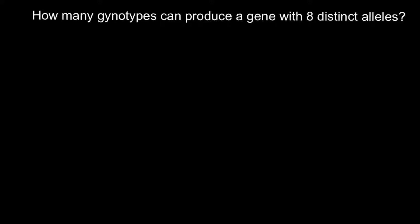Let's assume this question is about a normal diploid organism. A diploid organism has two sets of chromosomes — one set from the mother's side and another from the father's side. I'm using different colors to show that this is the same chromosome, but one came from the mother and one from the father. We have 23 pairs of chromosomes.